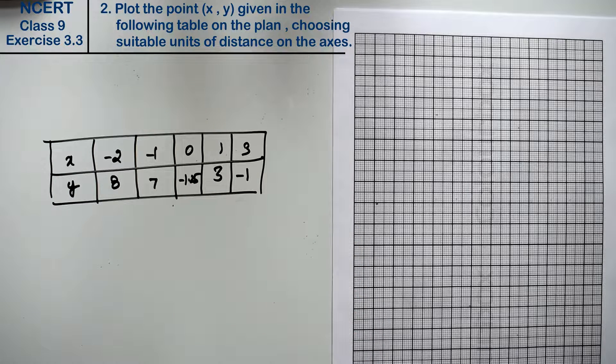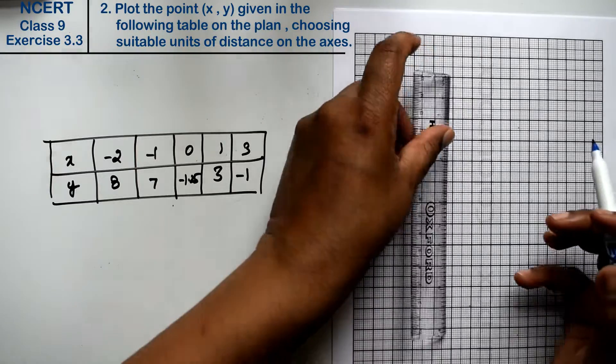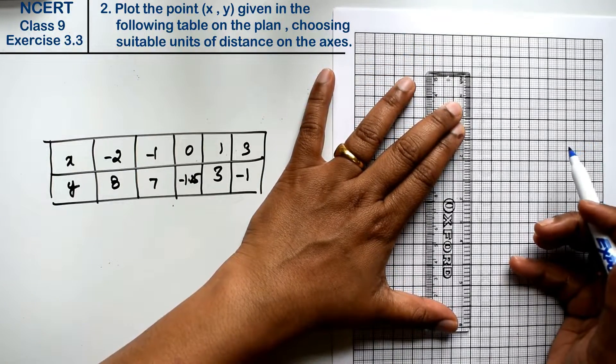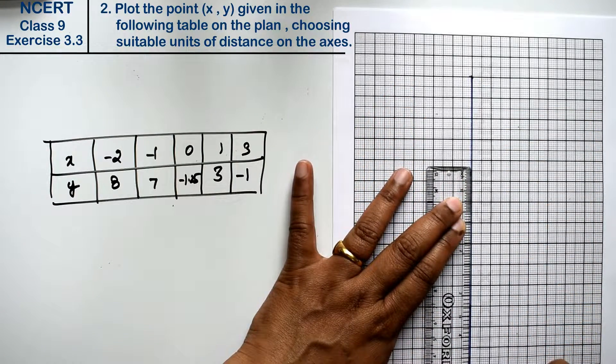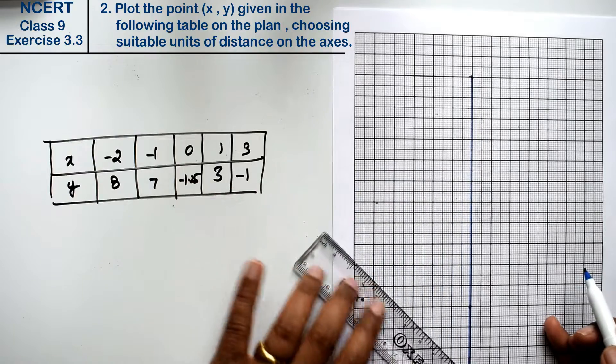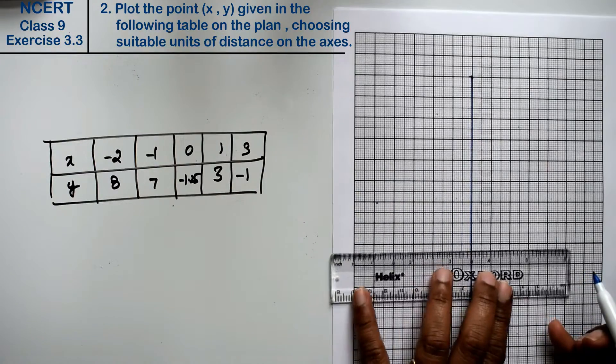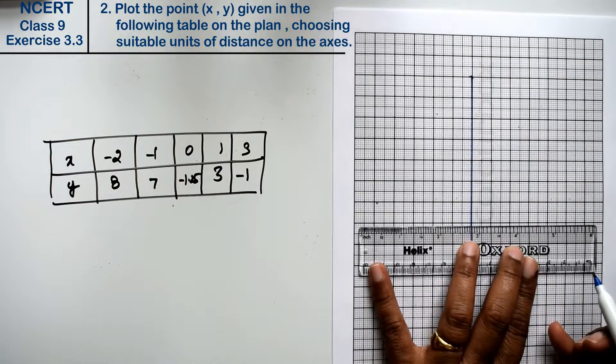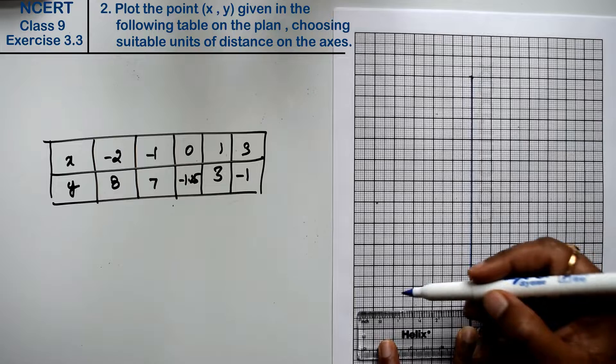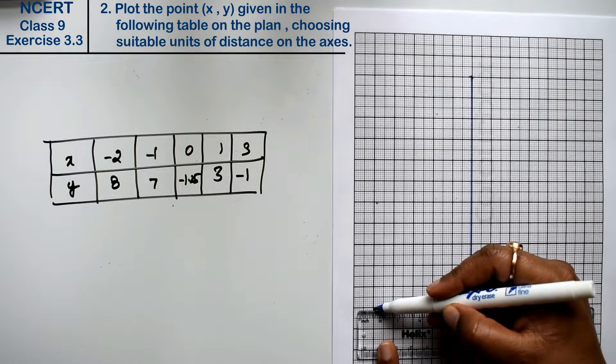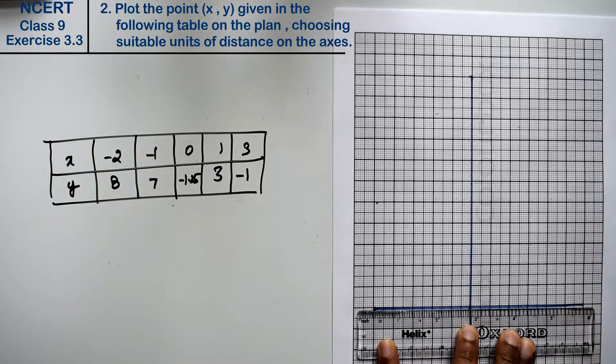So now we will make x and y axis. See, y is maximum 8, so we will make maximum 8, right friends? Now, this is our y axis. I will make it a little bigger. We will make a little bigger because y positive is greater, right friends?